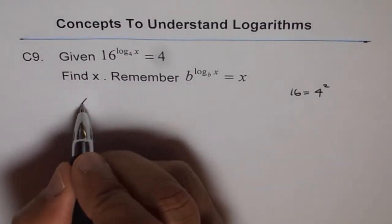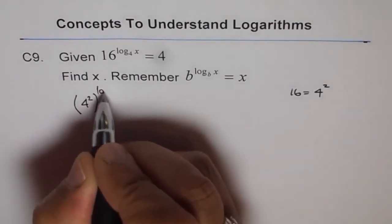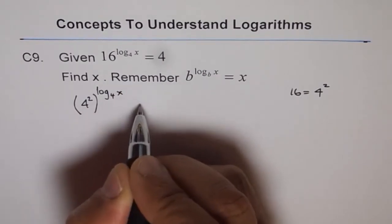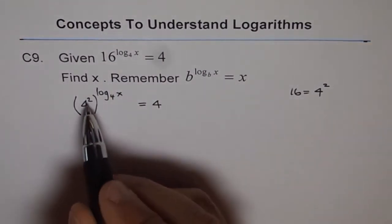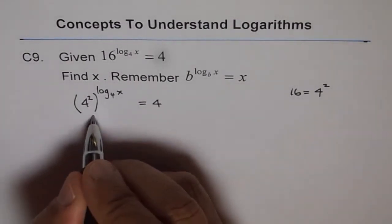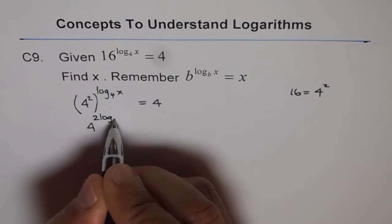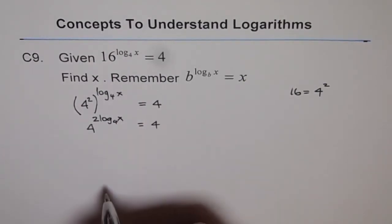And so we can write that as 4 squared to the power of log base 4 of x equals 4. Now we will use exponential rules and write this as 4 to the power of 2 log base 4 of x equals 4. And this 4 is to the power of 1.